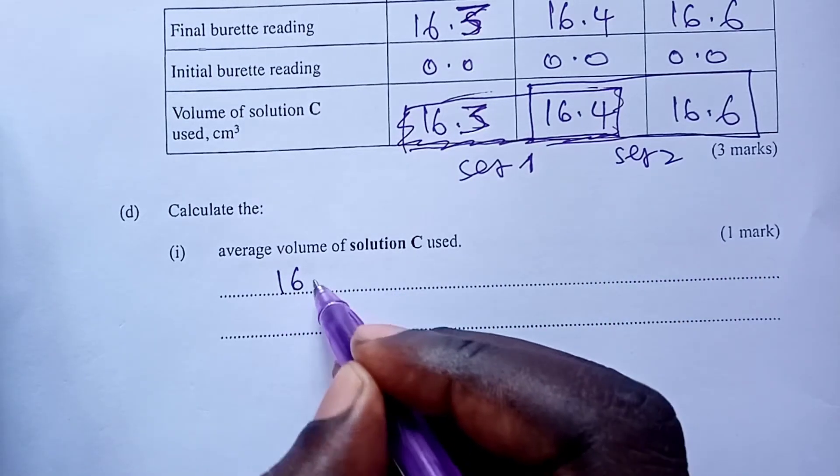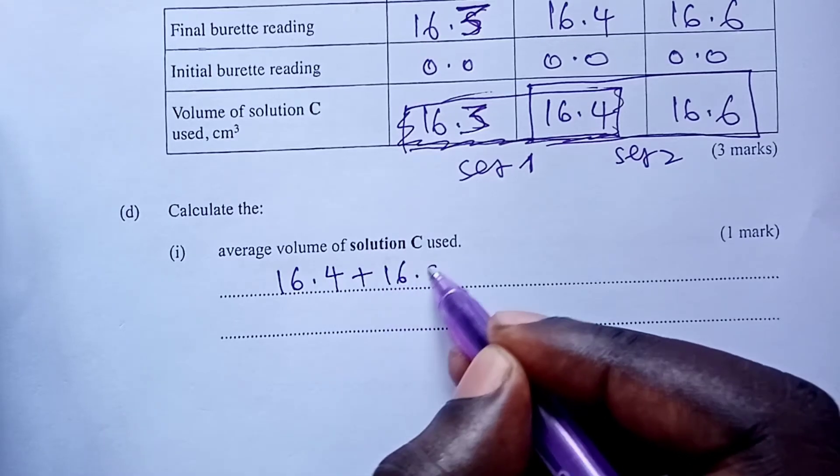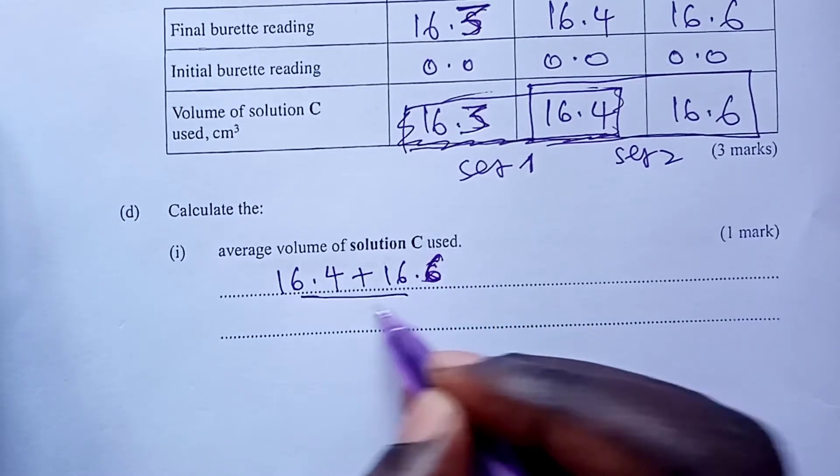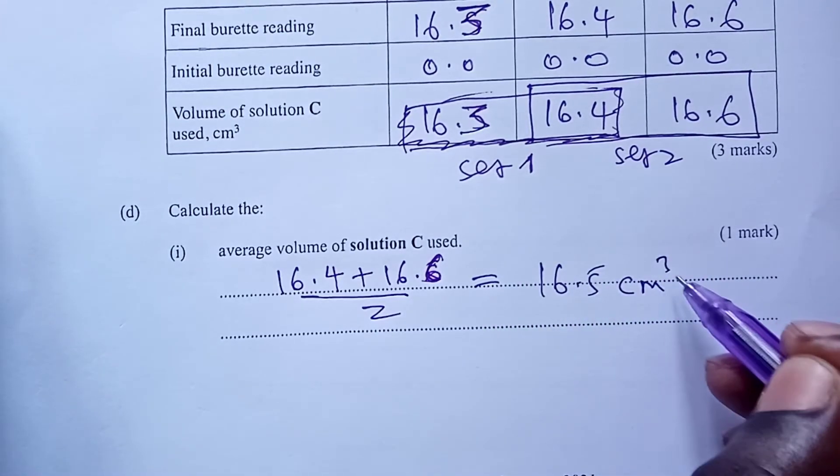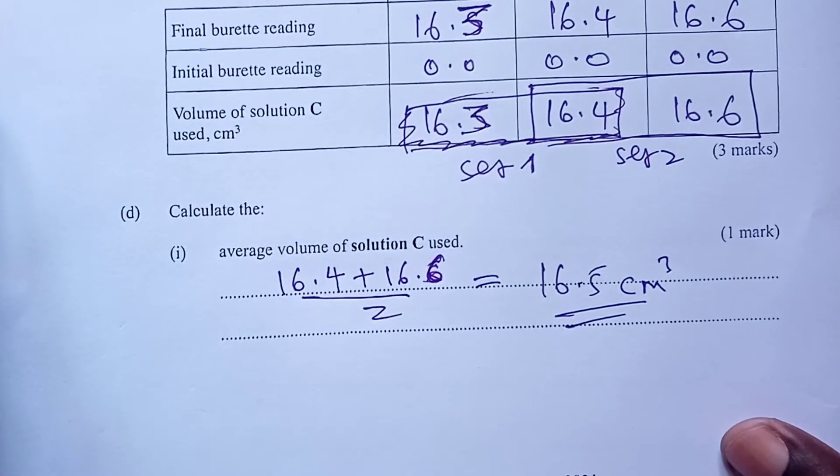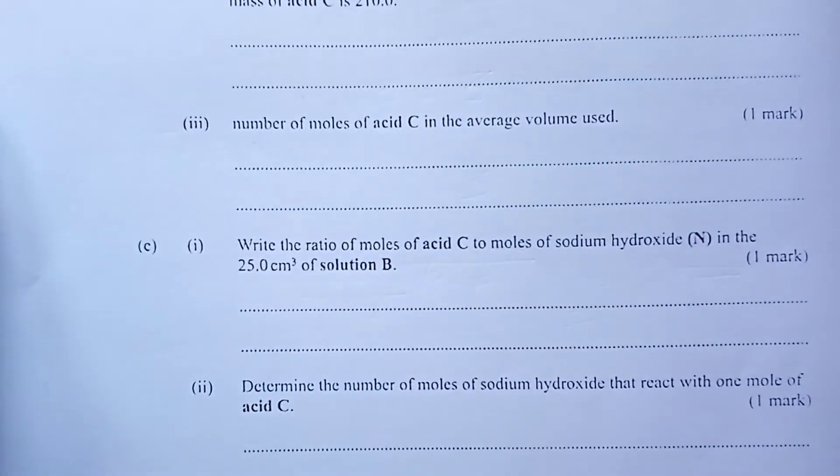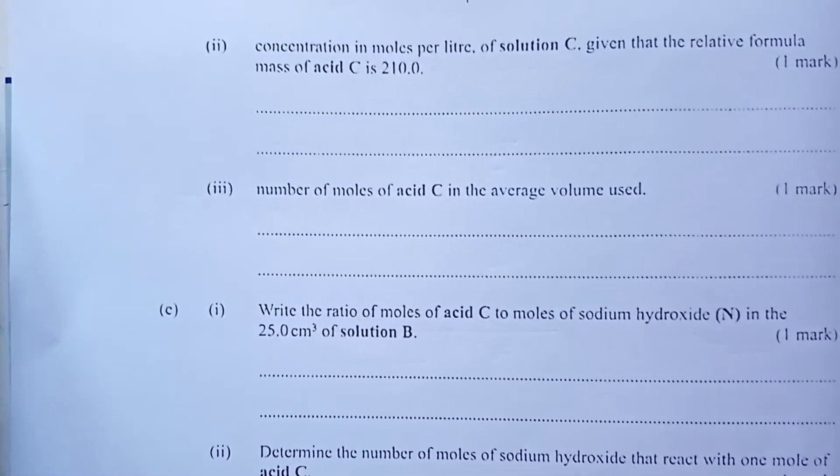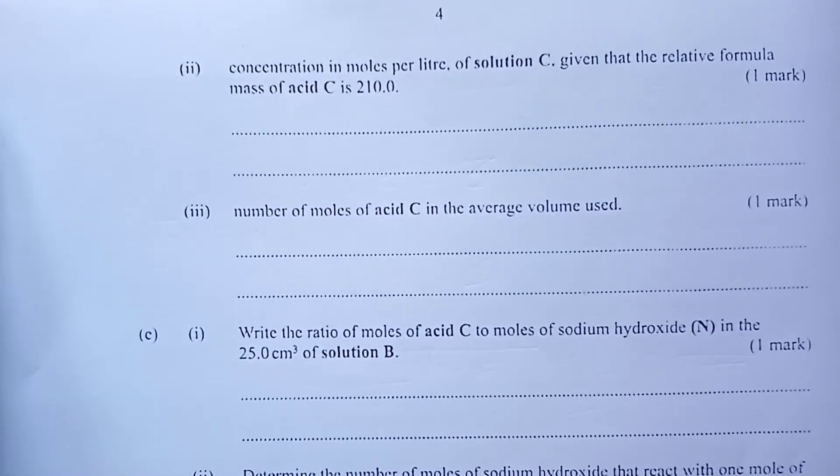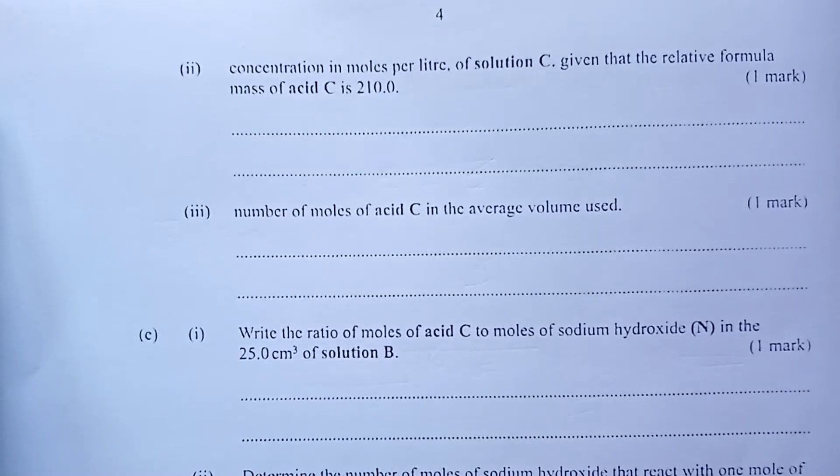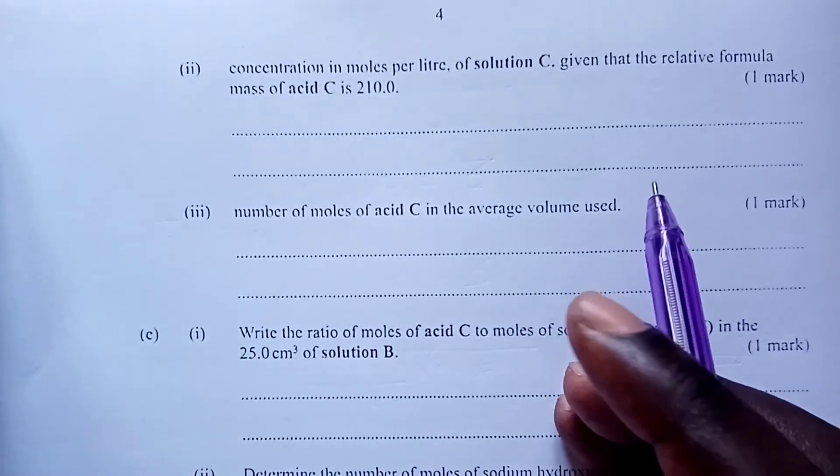So average volume this time, again, let's use set 2, 16.4 plus 16.6 over 2. And we are getting 16.5 cubic centimeters as our average volume. Good. We continue with now the questions that followed titration 2. And the first question we are asked is to calculate the concentration in moles per liter of solution C given that the relative formula mass is 210.